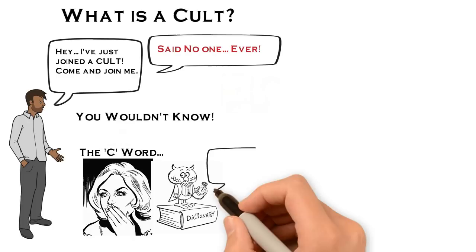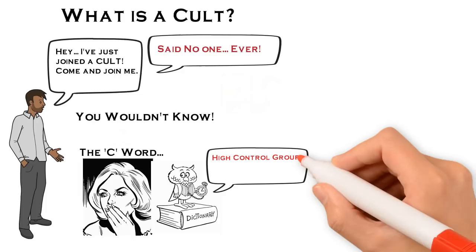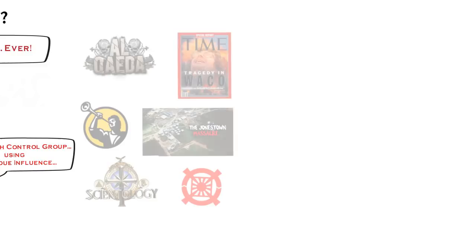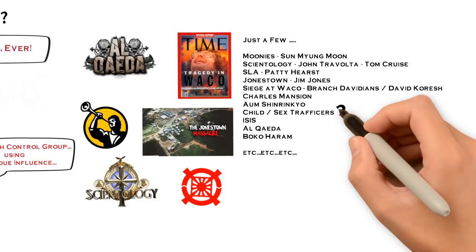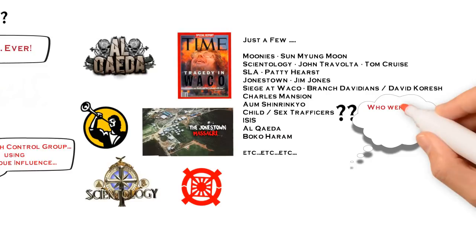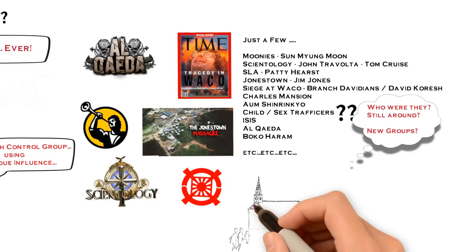Or some would say a high control group, or maybe a group that exercises undue influence. So let's have a look at some names past and present. Have you heard of any of these? Which would you think were cults or not? The Moonies, Scientology, the SLA, Jonestown, Waco, the Branch Davidians, Manson, The Way, Al-Qaeda, Islamic State, Boko Haram, North Korea, child or sex trafficking... we could go on and on.